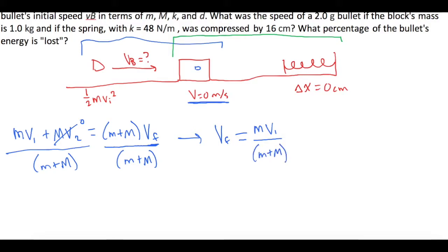Because the table is frictionless, the speed at which they are now sliding will be the same speed right before they hit the spring. So now let's move on to the second part of the problem, where the spring is compressed by the bullet and the block together.